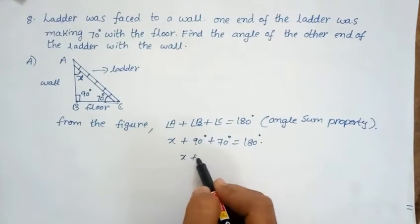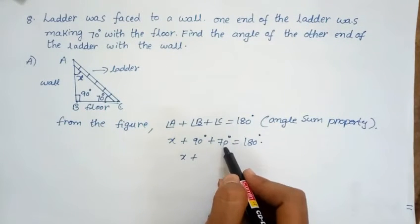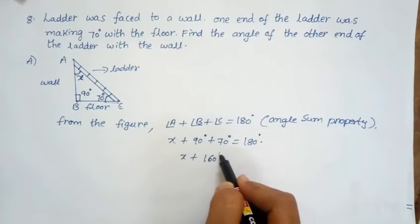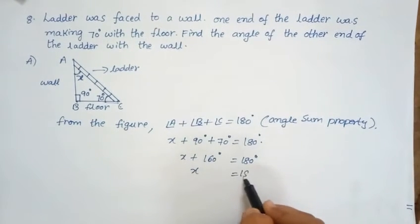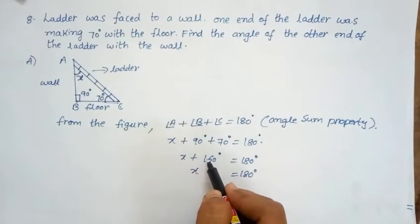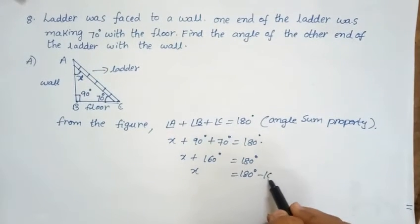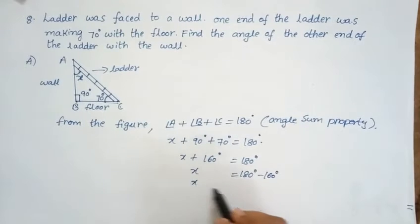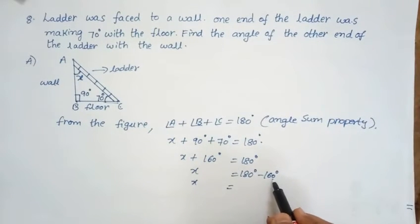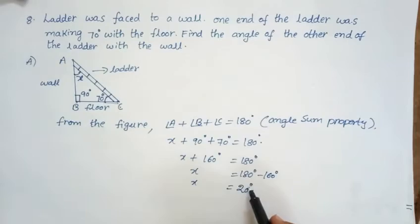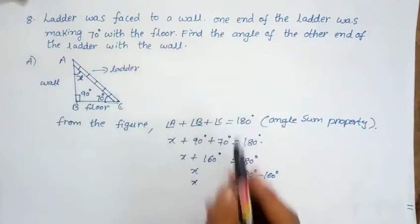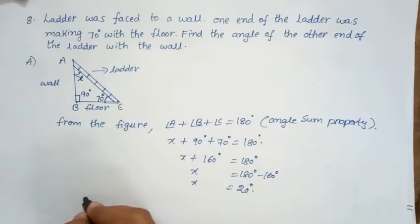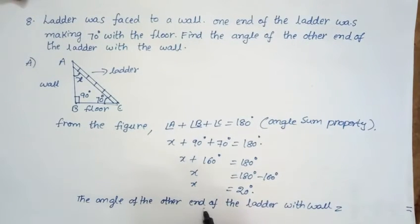From the figure, angle A plus angle B plus angle C equals 180 degrees. So X plus 90 plus 70 equals 160 degrees, which equals 180 degrees. So X equals 180 minus 160, giving 20 degrees. The angle of the other end of the ladder with the wall equals 20 degrees.